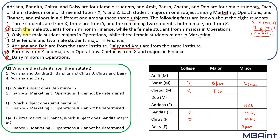Revisiting clue two: both male students in Y minor in finance, and the female student from Y majors in operations. Can Daisy be in Y? No — if Daisy were in Y, she would have to major in operations, but she already minors in operations, which is a contradiction. So Daisy cannot be in Y. This confirms that Adrina is in Y and she majors in operations.